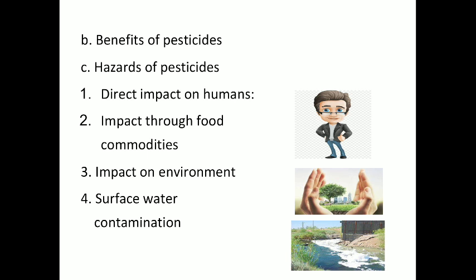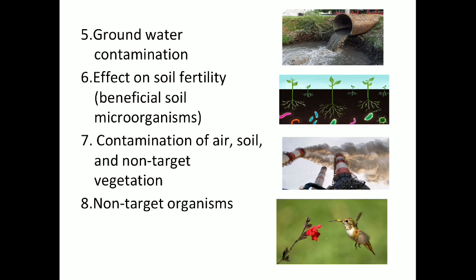Regarding the impact on the environment, through runoff or surface water contamination, pesticides from treated plants reach surface water and contaminate streams and rivers. Groundwater contamination is a worldwide problem. Once groundwater is polluted with toxic chemicals, it may take years to clean up, and this cleanup may be a very costly and complex process.